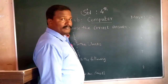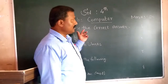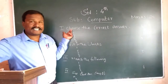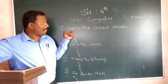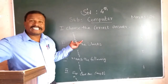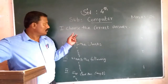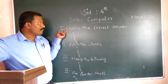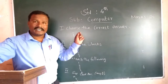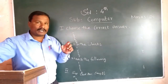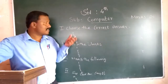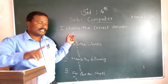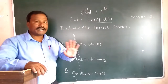Roman numeral I: Choose the correct answer. You can find six questions in this section. Write this title on your paper. Then write question number 1, and write only the answer — don't write the question.